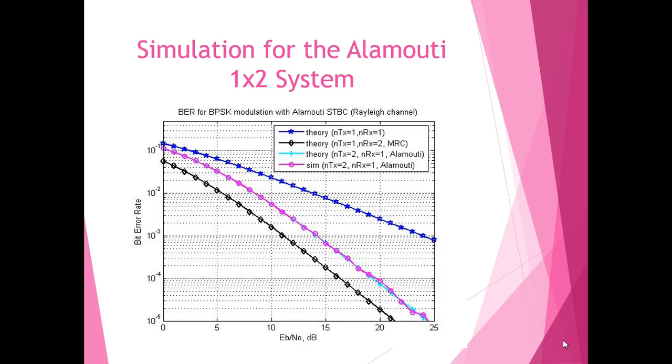Now on simulating the Alamouti STBC 1x2 system and comparing with the MRC scheme with 1 transmitting antenna and 2 receiving antennas, we found that the bit error performance of the Alamouti scheme, although better than the classical 1 transmit and 2 receive antenna, was actually roughly 3 dB poorer than the MRC 1 transmit and 2 receive antenna. So we can conclude that the Alamouti 1x2 system is not as good as the MRC 1x2 system in this case.